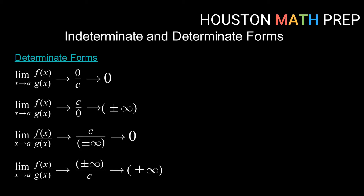So let's start with some determinate forms. Here we're going to focus in on the limit as x goes to a, where a can be any constant or even positive and negative infinity, and we're going to look at things involving a quotient. So we're going to think about what's going on with the top limit and what's going on with the bottom limit. Starting with the top one here, if the limit as x goes to a of f(x) — my numerator — is going to zero, and the limit as x goes to a of g(x) — my denominator — is going to some c, where c is any non-zero constant, then we can say that overall that limit goes to zero.